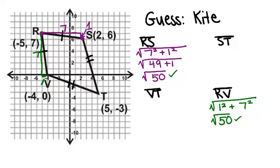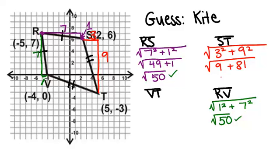For ST, I want to find the change in x and the change in y. The change in x is 3 and the change in y is 9. So that means that the length of ST is the square root of 3 squared plus 9 squared, which is 9 plus 81 or the square root of 90.